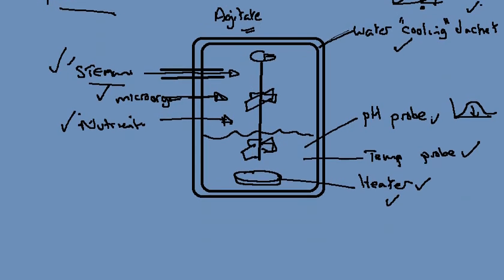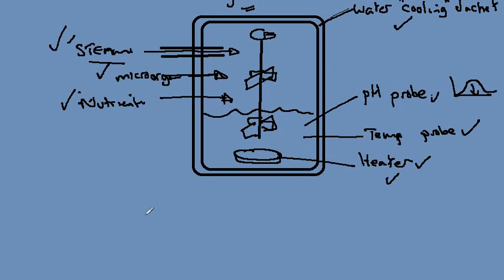Overall, the idea of the fermenter is to create a reaction centre in which we control the optimum growth conditions for the microorganism so that it's able to produce the product that we're looking for.